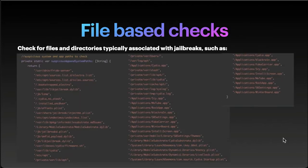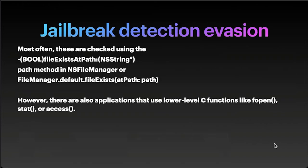File-based checks: check for files and directories typically associated with jailbreaks, such as 3uServer, Electra, Cydia, etc. Most often these are checks using the fileExistsAtPath function in NSFileManager or FileManager.default.fileExists. However, there are also applications that use low-level C functions like fopen, stat, or access.